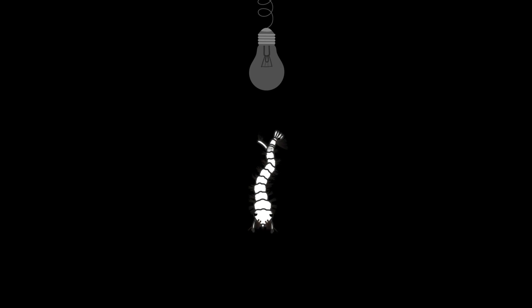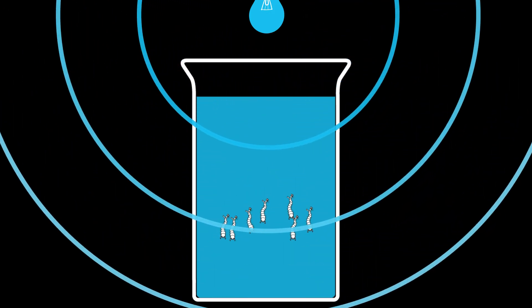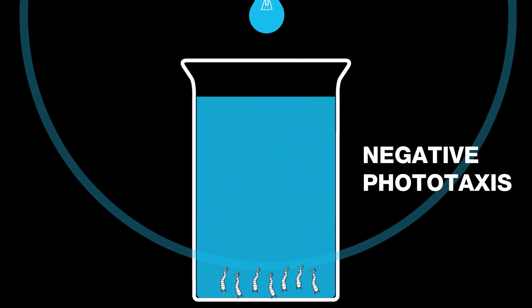Researchers have developed specific lights that are highly repellent to Aedes mosquito larvae. In water, this response makes the larvae move away from the light in a process known as negative phototaxis.